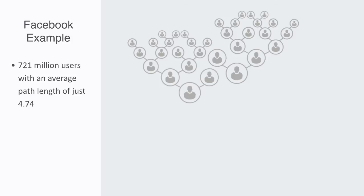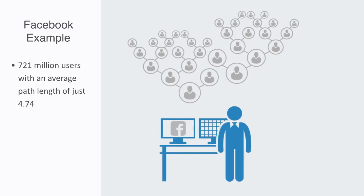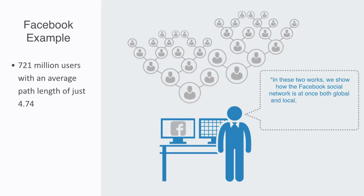This appears to be an extraordinary low distance between any two members of such a large network. We can quote one of Facebook's spokespersons on this finding, when he said, In these two works, we show how the Facebook social network is at once global and local. It connects people who are far apart, but also has the dense local structure we see in small communities.